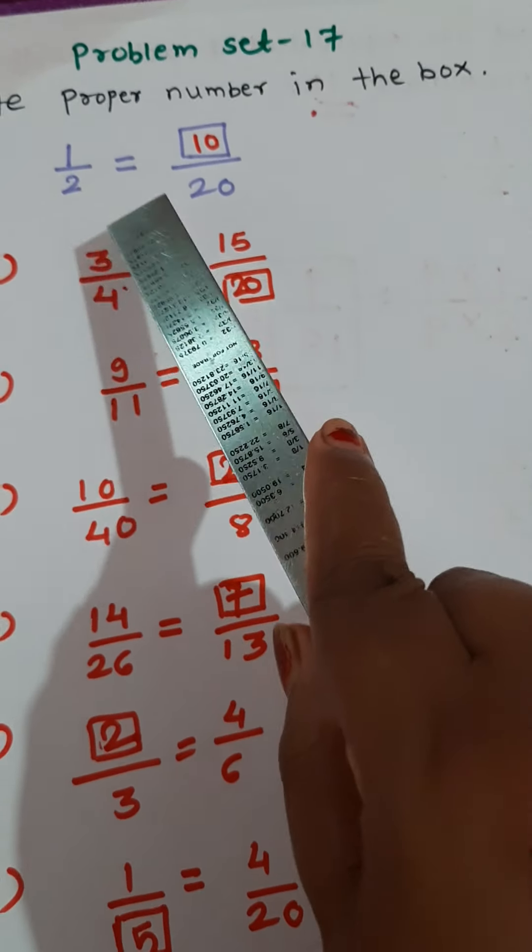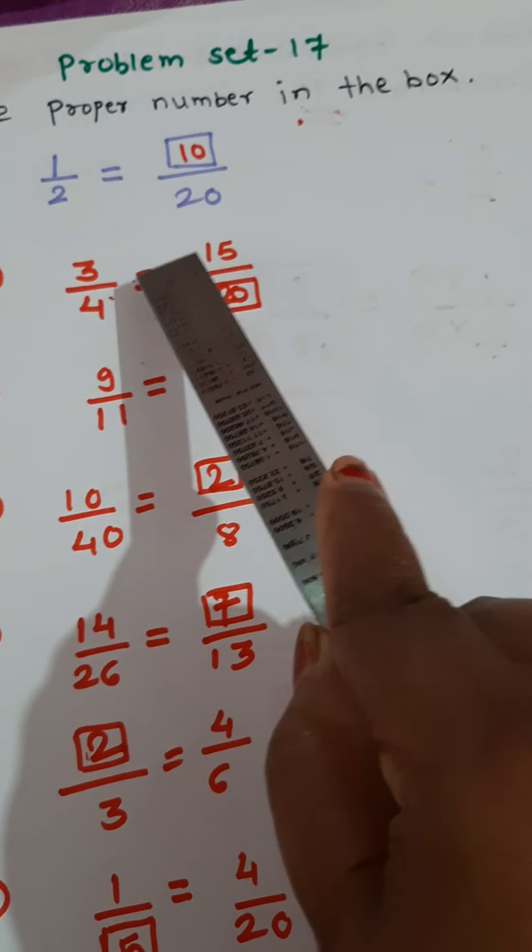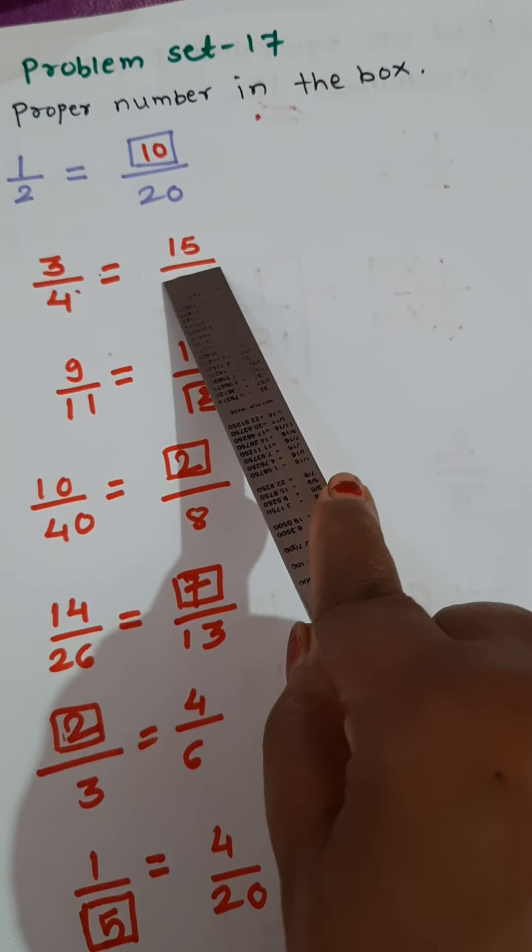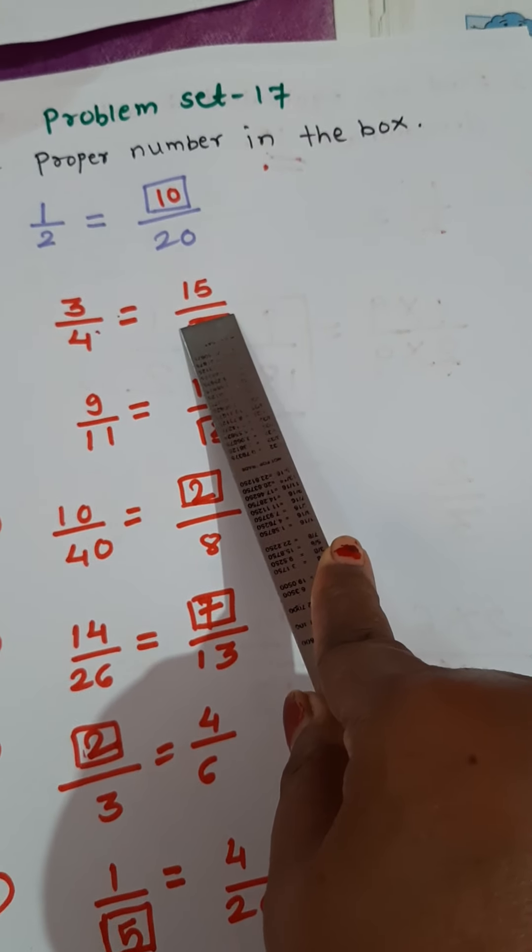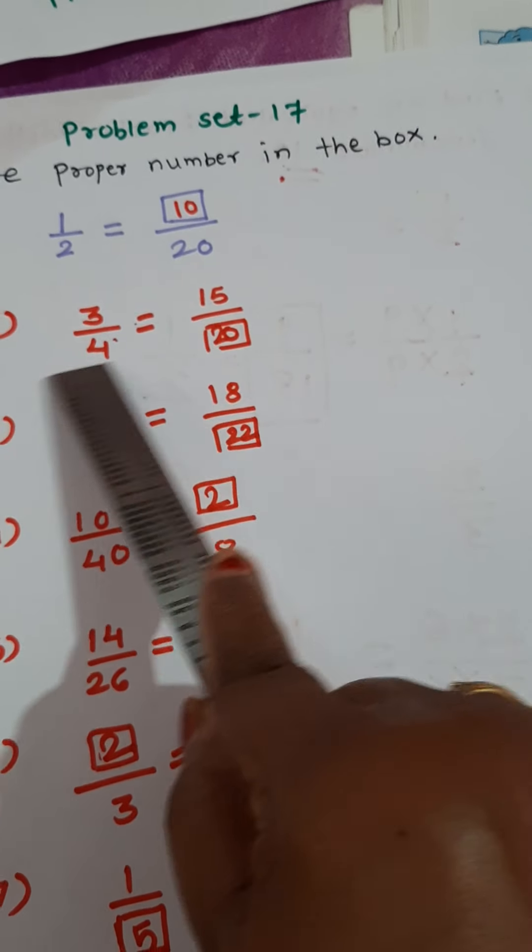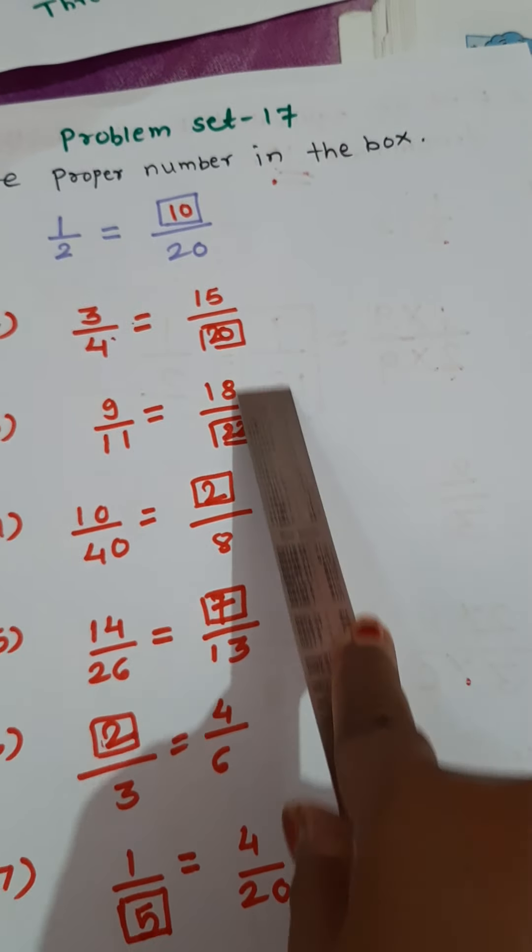Look at the second example. 3 upon 4 is equal to 15 upon dash. We know which number is here. So 3 how many are 15? 3 fives are 15. So 4 fives are 20. Like this way.